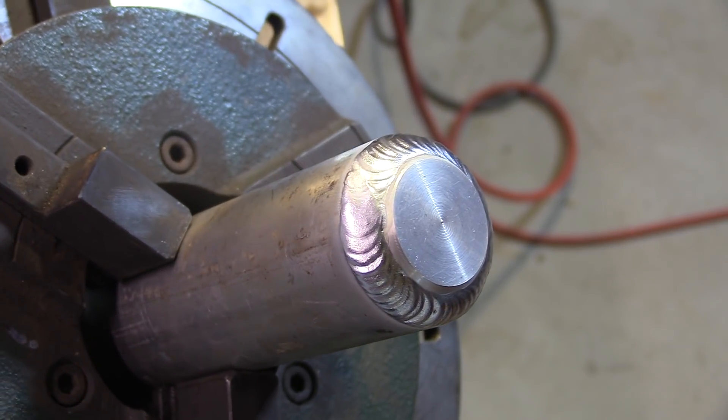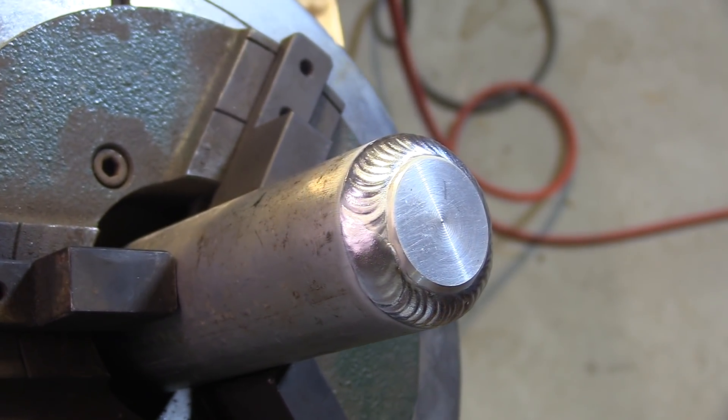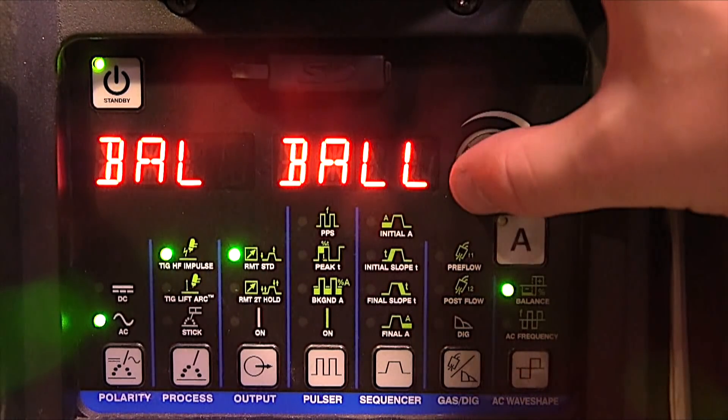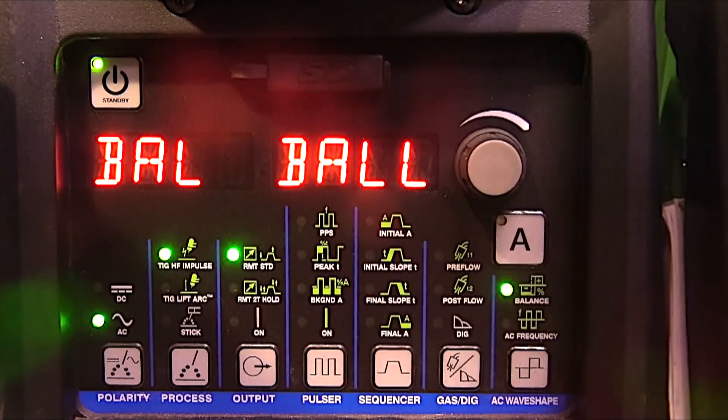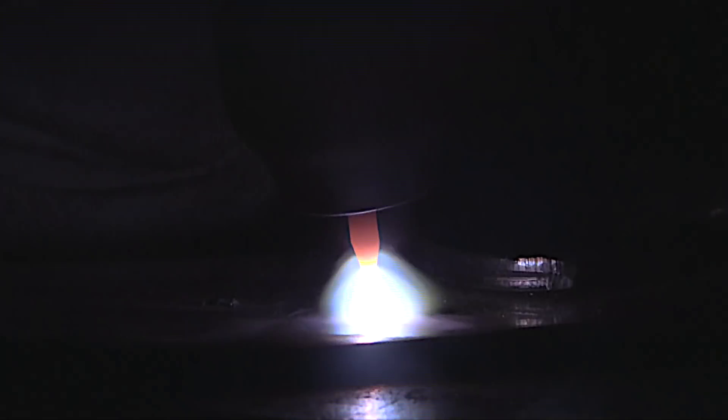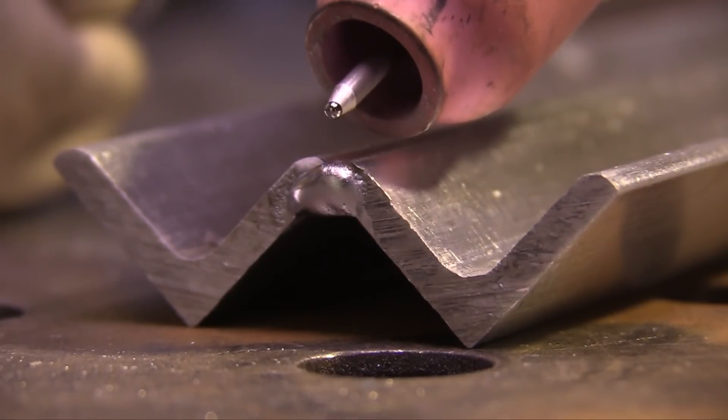Coming up, I'm going to show another application for a rounded tip—not quite a balled tip but a rounded tapered tip. Some machines have a function to actually ball the electrode. See, it reads out on my AC balance: ball. That's just putting a lot of EP into the cycle. I'm going to hold this directly over a piece of copper and press the foot pedal just enough while I keep an eye on it to get a rounded tapered tip.